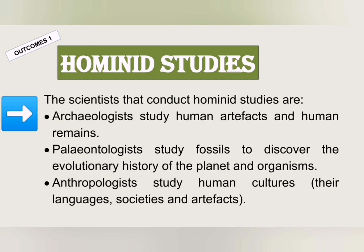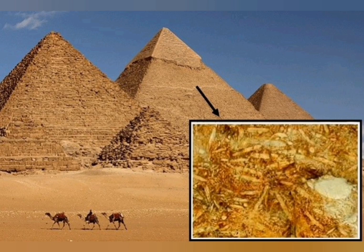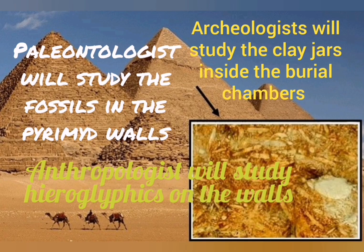Archaeologists study human artifacts and human remains. Paleontologists study fossils to discover the evolutionary history of the planet and organisms on the planet, while anthropologists study human cultures, their languages, societies, and artifacts. Many of Egypt's most famous monuments, such as the Sphinx and pyramids, contain hundreds and thousands of marine fossils preserved in their walls. So paleontologists, anthropologists, and archaeologists will work together when looking at a pyramid to figure out what went on at that time in history.